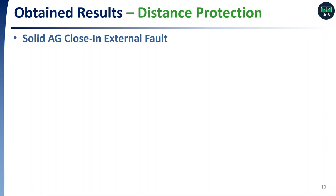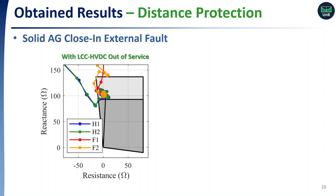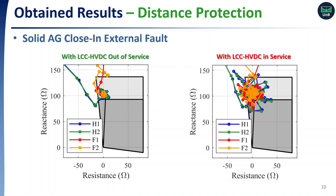Here we can see the results for distance protection. First, when both LCC-HVDC bipoles are out of service, only AC infeed current flows through the system. In this way, the performance of the distance protection was as expected, such that the fault is seen in the second zone of the relay installed at the Araraquara 2 station. However, if both LCC-HVDC bipoles are in service, the AC waveforms become quite distorted, mainly when commutation failures take place. Therefore, errors in the phasor estimation process arise, leading Zone 1 to detect the fault, and a false trip may be issued.